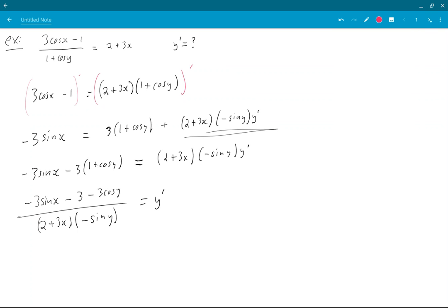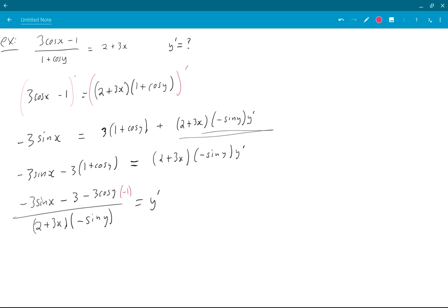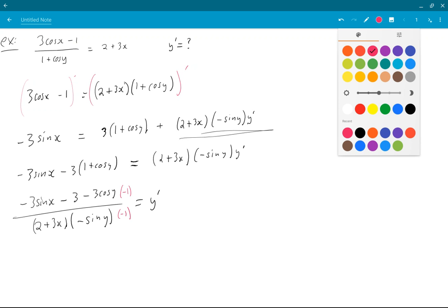So if I want to take my answer and make it look like the answer I'm going for, I'll multiply top and bottom by minus 1.